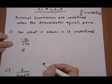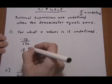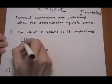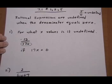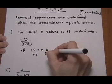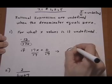So if we're asked what values of x make this rational expression undefined, it will be undefined if 17x equals zero, when the denominator equals zero. Now we solve the equation, divide by 17 on both sides, and the answer will be x equals zero makes it undefined.